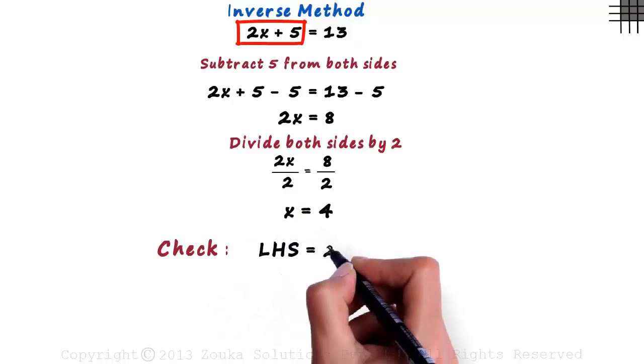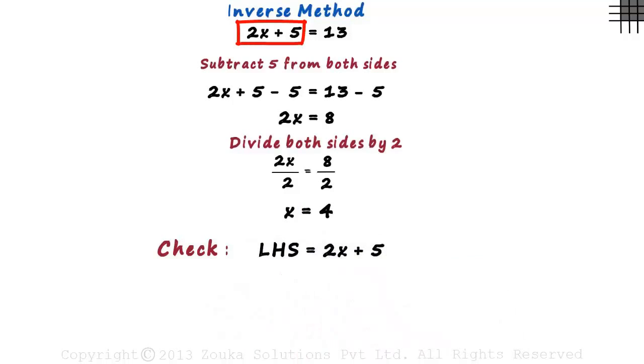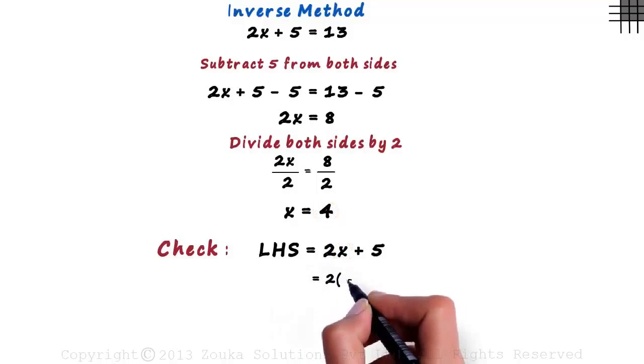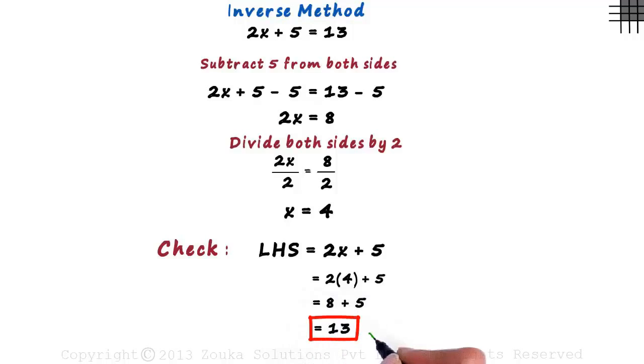The left-hand side is 2x plus 5. Substituting 4 in place of x, we get 2 multiplied by 4 plus 5. That equals 8 plus 5, which is 13, the same as the right-hand side. So we say that our value of x is correct.